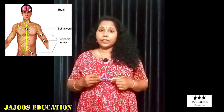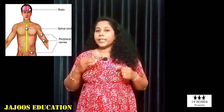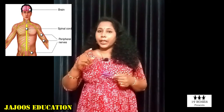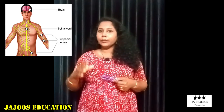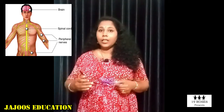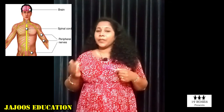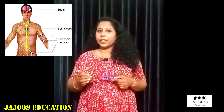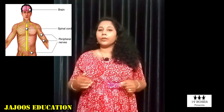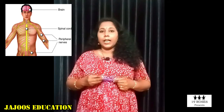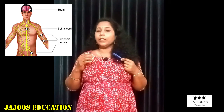Let's talk about the Nervous System. There are two types of Nervous System. The first is the Central Nervous System, which is made up of the Brain and Spinal Cord — that is what we call the Central Nervous System. The second type is the Peripheral Nervous System.